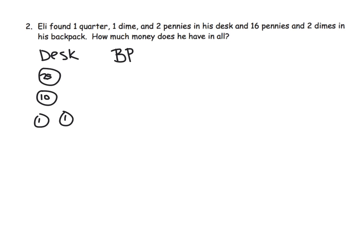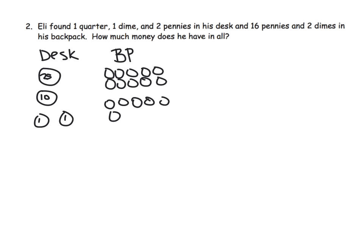Now in his backpack — I'm going to just write BP for backpack — he found 16 pennies: 1, 2, 3, 4, 5, 6, 7, 8, 9, 10, and then 1, 2, 3, 4, 5, 6. So all of these are pennies that he found in his backpack. And he found two dimes in his backpack.